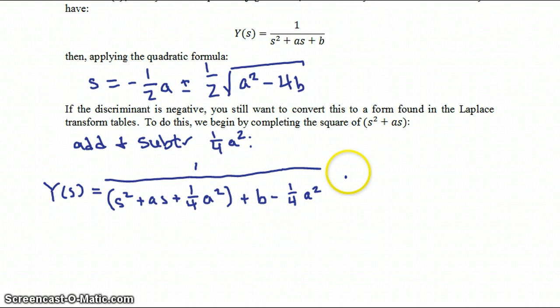Now that is in the form of 1 over S plus A squared plus omega squared.